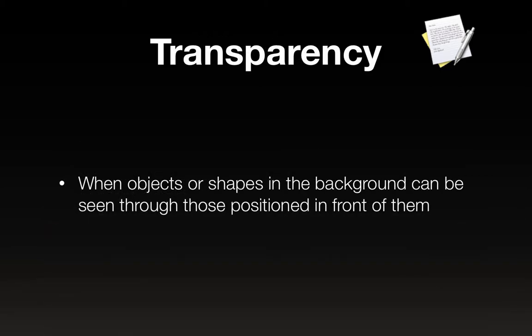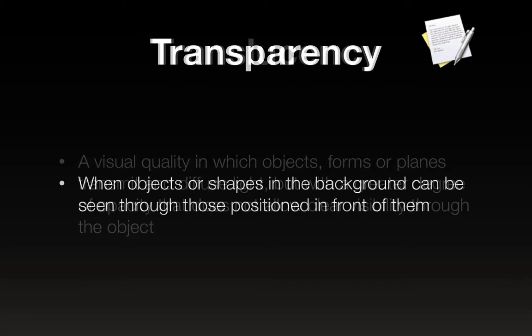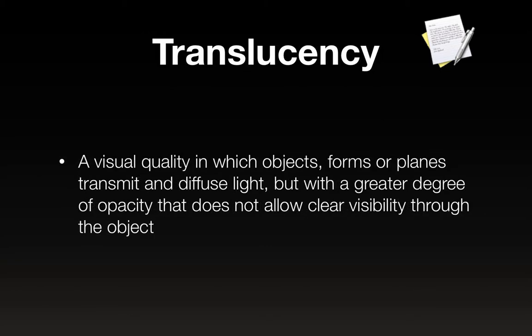Transparency is when objects or shapes in the background can be seen through those positioned in front of them. Translucency is a visual quality in which objects, forms, or planes transmit and diffuse light, but with a greater degree of opacity that does not allow clear visibility through the objects. Examples of translucent objects are things like skin, leaves, and paper — they let light through, but you can't really see whatever's behind them.